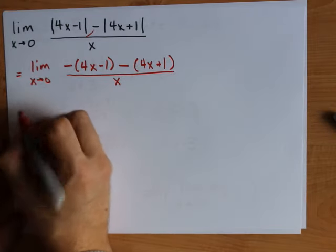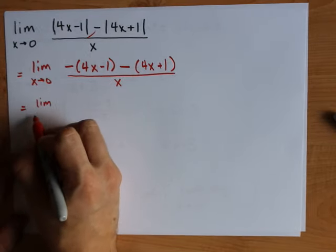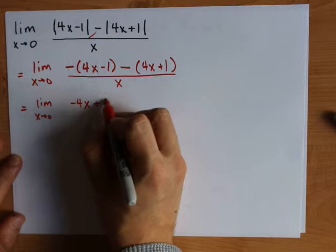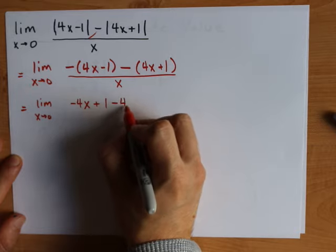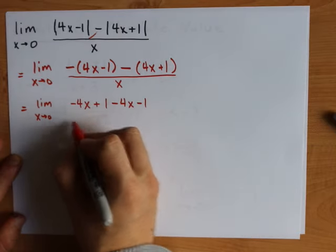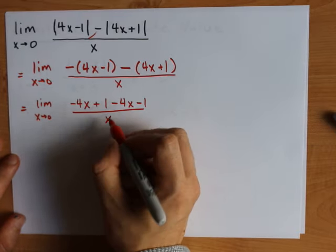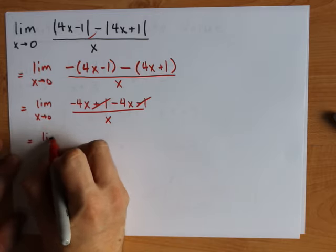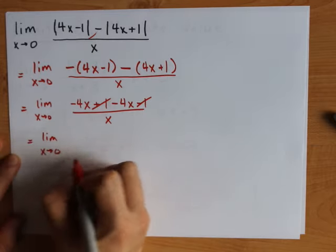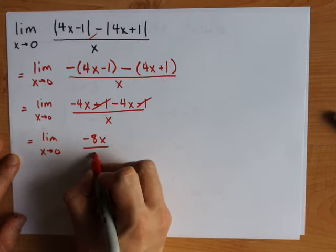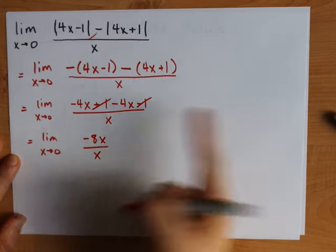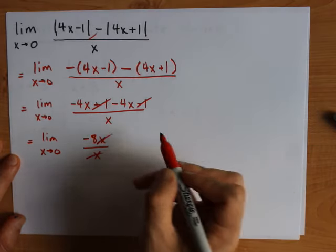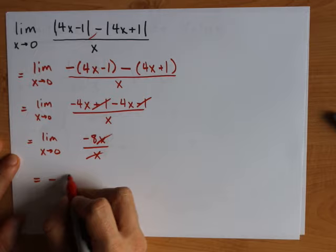Now I'm going to expand the top here, see what we get. I get the limit as x approaches zero of negative 4x plus 1 minus 4x minus 1 all over x. Plus 1 and minus 1 cancel out with each other. I have the limit as x approaches zero of negative 8x over x. The x's finally cancel. And so the answer is negative eight.